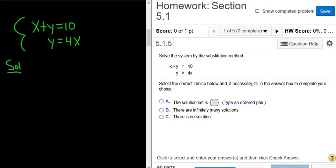We'll start by taking this and plugging it in here, substituting. So it would be x plus 4x equals 10. And x plus 4x is 5x. So 5x equals 10.